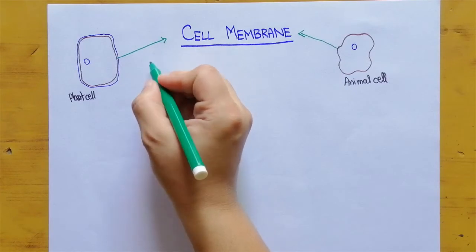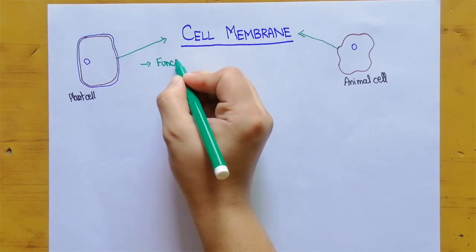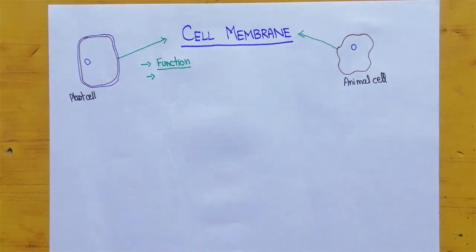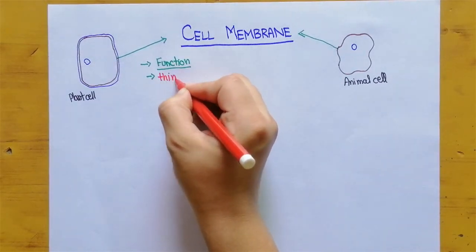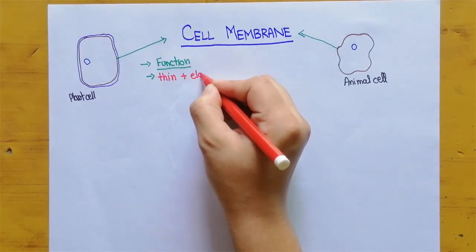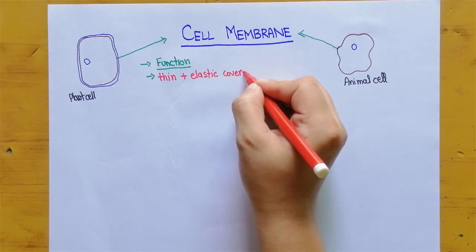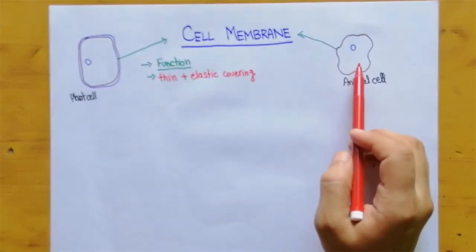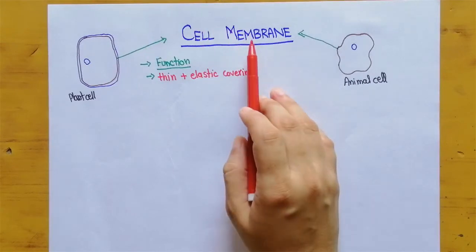So if we talk about the function, cell membrane is actually a very thin and elastic covering that covers the cytoplasm of the cell. So all the eukaryotes and prokaryote cells they contain cell membrane.